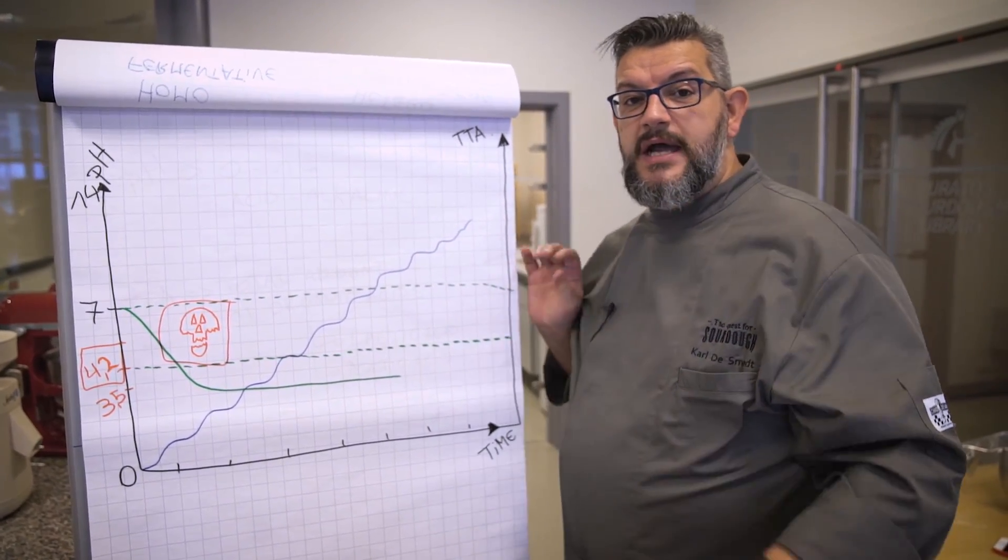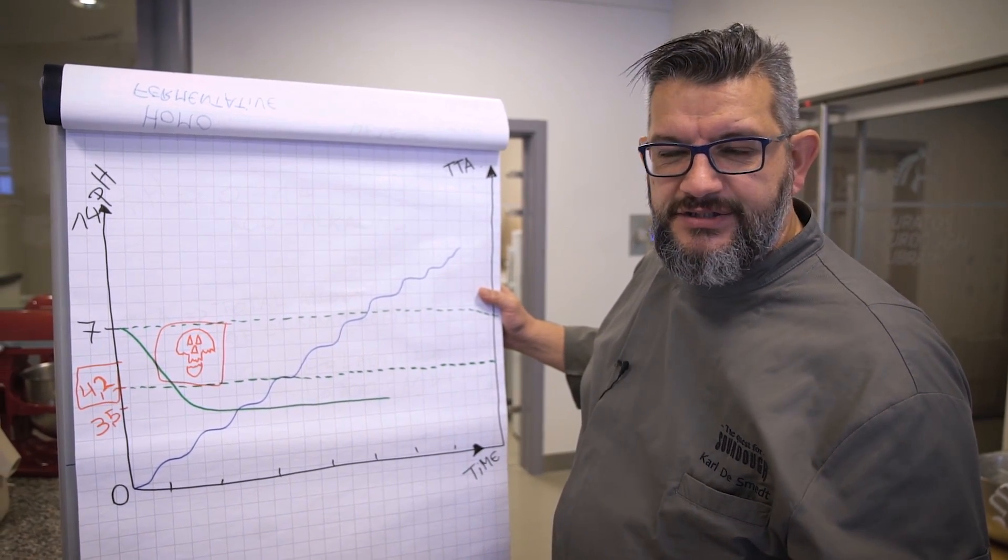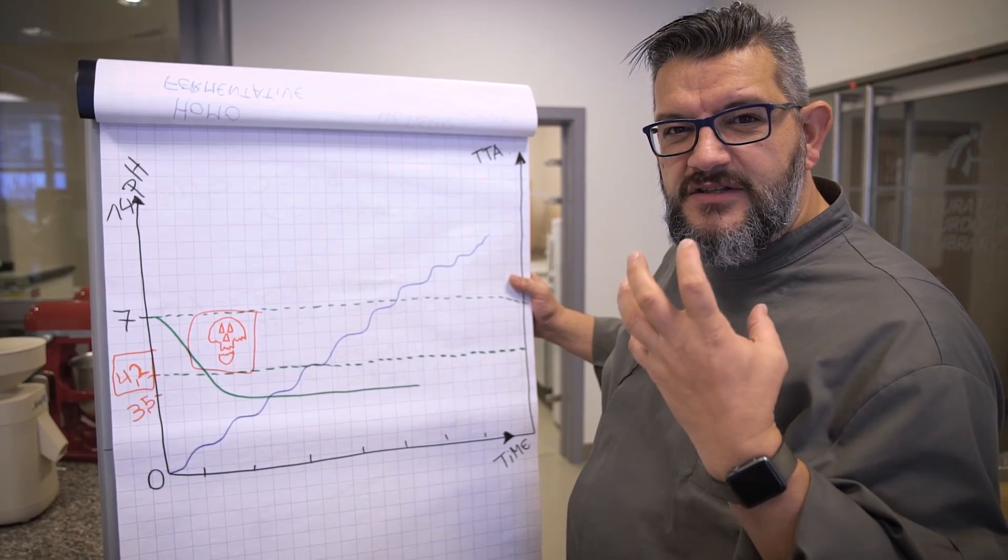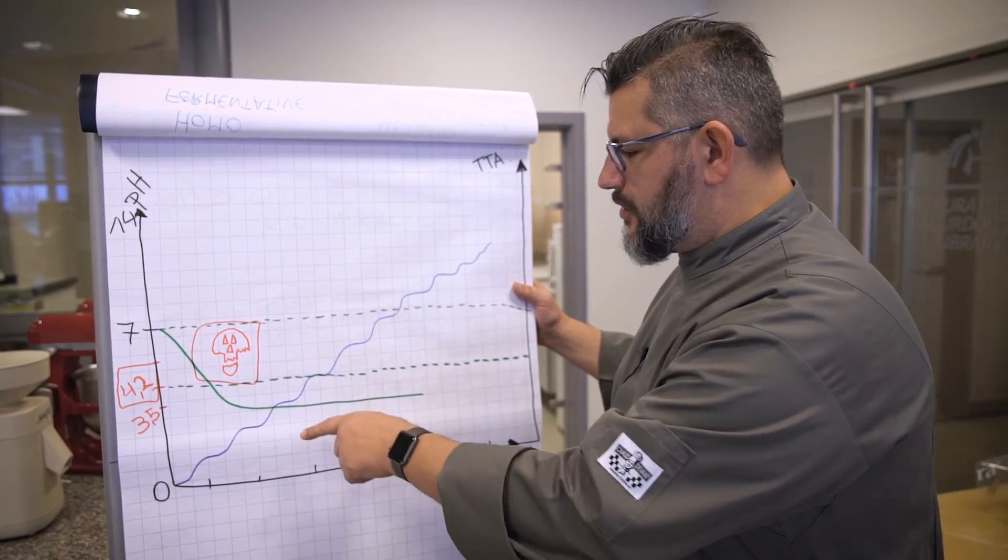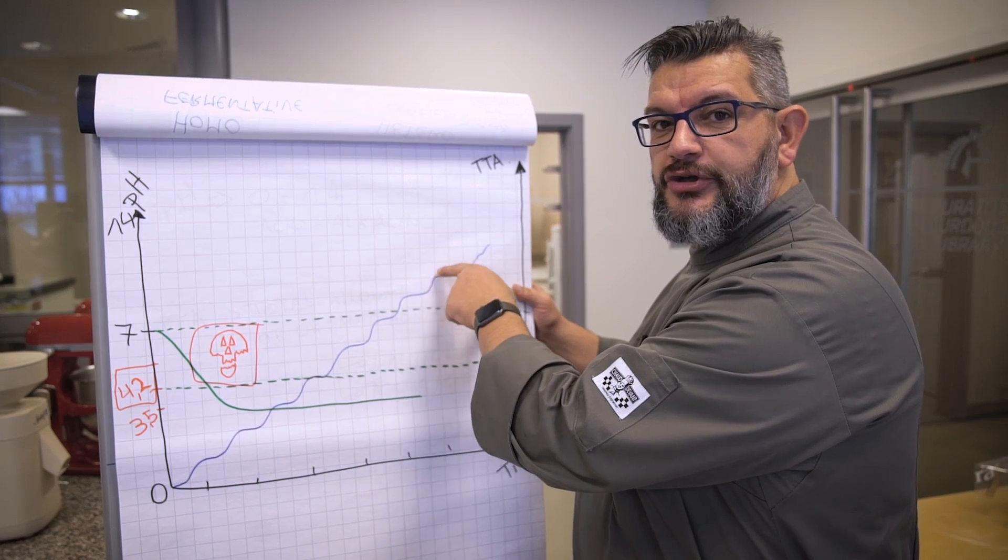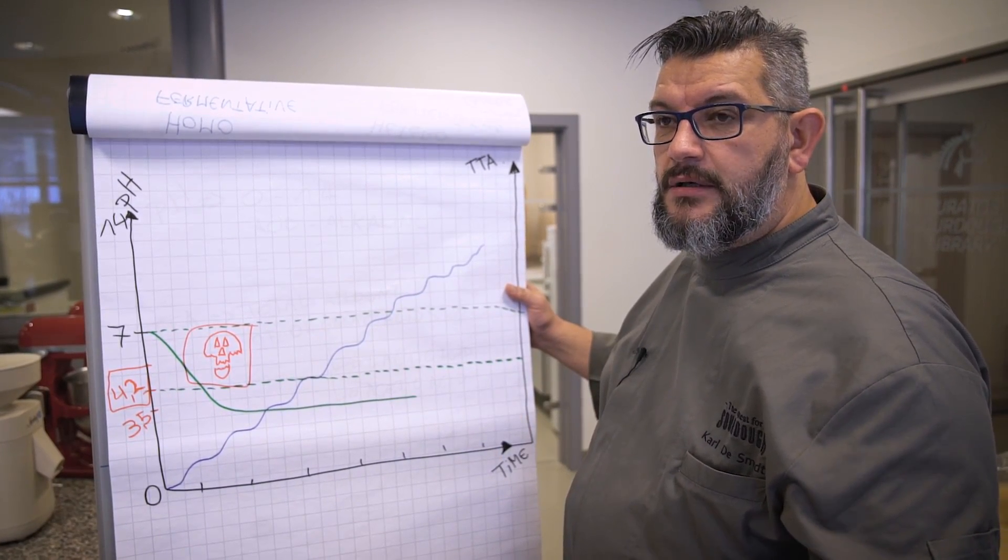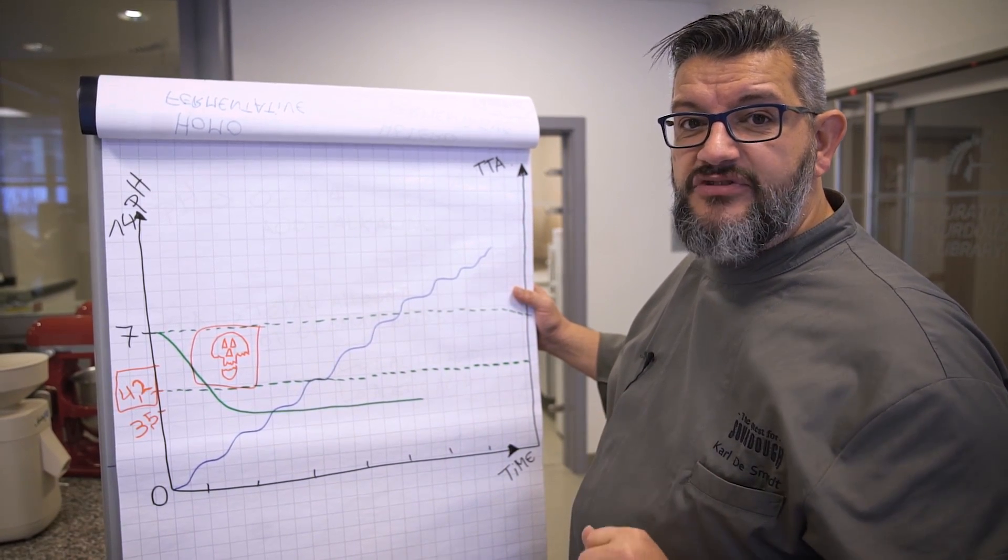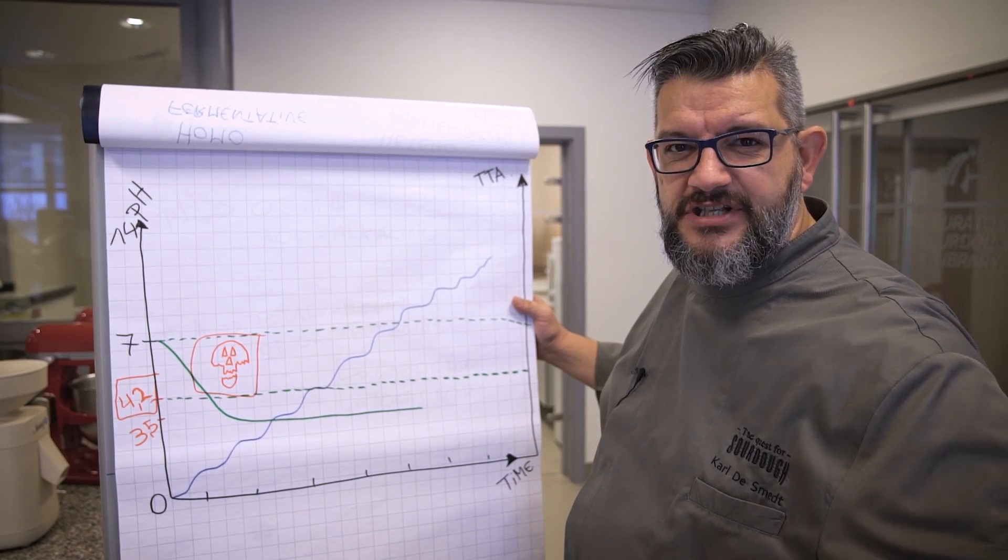And that's why probably you've noticed when you do not use your starter for a long time and you take it from the fridge, that the flavor is a bit too tangy, too acid. Well, that's because slowly the total amount of organic acid is increasing. To get rid of those organic acids, you can give your sourdough starter a bath. But I have another video for that.